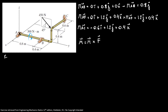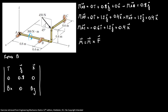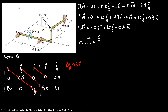Now we're going to calculate our moments, since moment equals the cross product of distance by force. Starting with force B, we build our I, J, K matrix. We have the row 0, 0.8, 0 and the force row BX, 0, BZ. Solving the determinant, we get BZ times 0.8 in the I direction and minus 0.8 BX in the K direction.